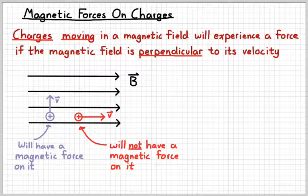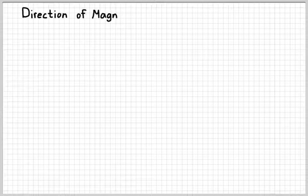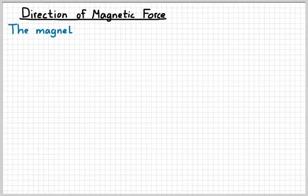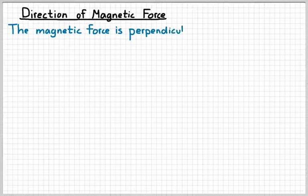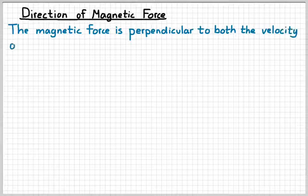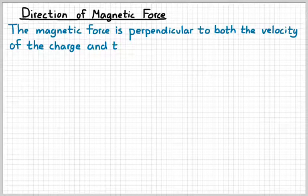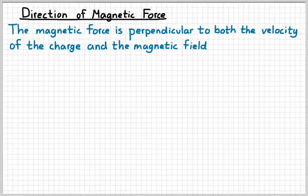If we were to draw another charge in there at rest, it would not be affected either. So the first thing we need to learn about this force is what its direction is. This is a little bit different — the magnetic force is always perpendicular to both — keyword both — the velocity of the charge and the magnetic field.